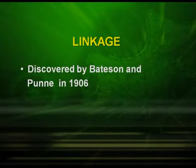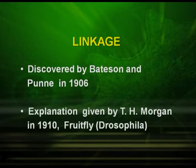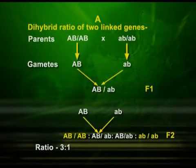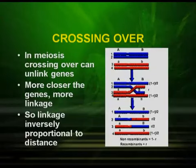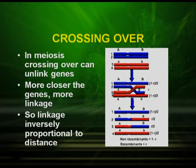Now let us see another very important phenomenon called linkage, which was discovered by Bateson and Punnett in 1906. The explanation was given by D.H. Morgan in 1910 based on his studies on Drosophila. Let us explain the dihybrid ratio of two linked genes and observe the result. The ratio, if you see, is 3:1, which is quite different from the usual dihybrid ratio of 9:3:3:1. In the cross, the homozygous dominant represented by AB and the recessive ones by small a and small b, the ratio obtained was 3:1 instead of 9:3:3:1. So where were the recombinants? It was the parental type that appeared, and only one recessive. Here we could define linkage: genes located on the same chromosome tend to be inherited together during meiosis.